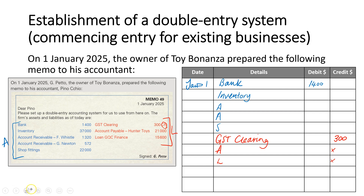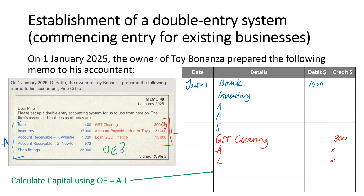Now debits and credits don't yet equal, and we know that debits need to equal credits in a commencing entry. We need to calculate capital, because at this point only assets and liabilities have been included — owner's equity has not. The difference is the capital amount, and capital as owner's equity would have an opening balance on the credit side. To calculate capital, use the formula: assets minus liabilities.